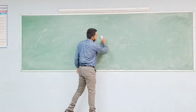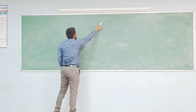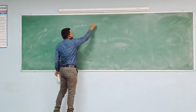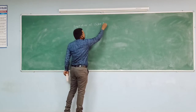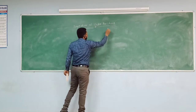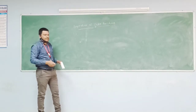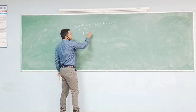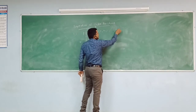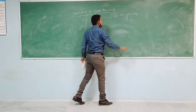Now we move to properties of beta functions. The first property is the symmetric property: beta of m comma n is equal to beta of n comma m. This is known as the symmetric property of the beta function.